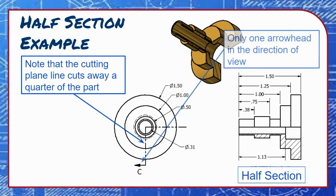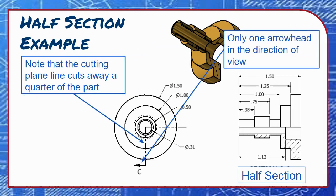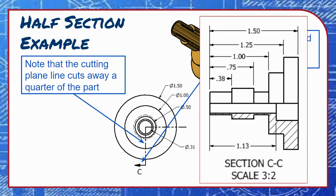A single arrowhead is used to indicate the direction of view. The section view appears much like a right side orthographic view, except that the lower quarter of the object is removed to show the internal details. This allows for all of the part's dimensions to be shown with only two drawing views instead of a front, a right, and a full section view.